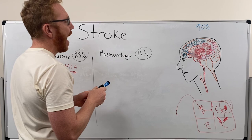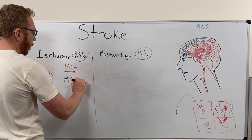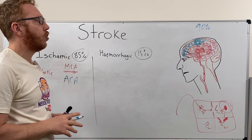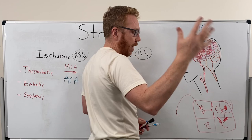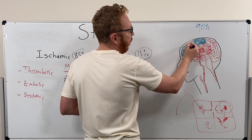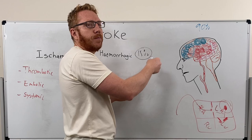What about the anterior cerebral artery? That's also going to affect the primary motor cortex, but higher up — the leg region. So if the left side of the brain is affected, you're going to have right-sided weakness in the leg, as well as sensory changes in the leg. It's also going to affect the executive center of the brain, so you could have personality changes, inability to plan, and confusion.